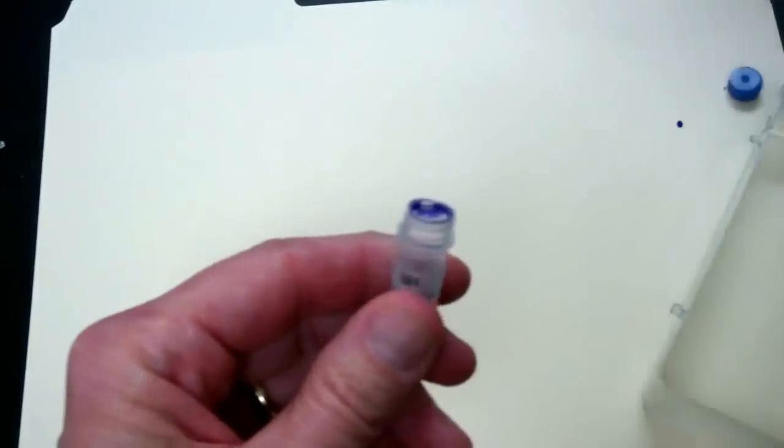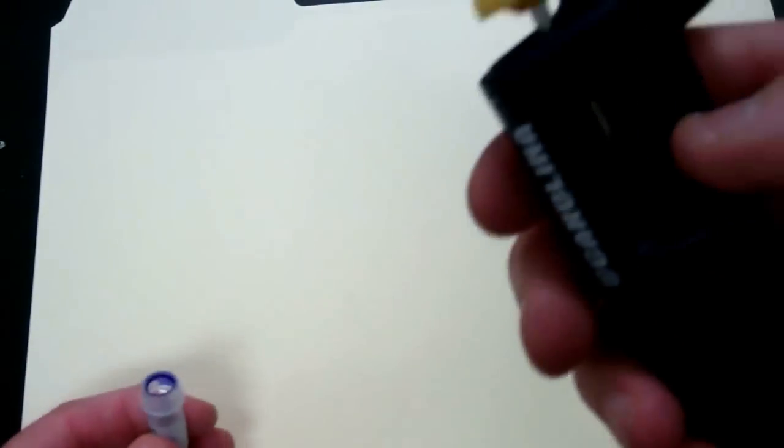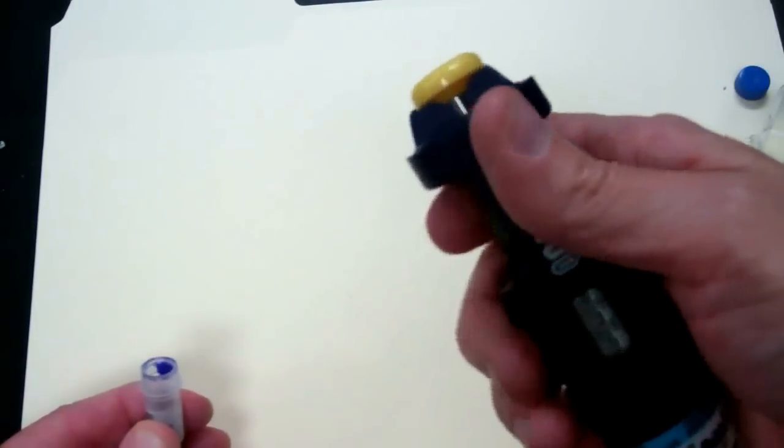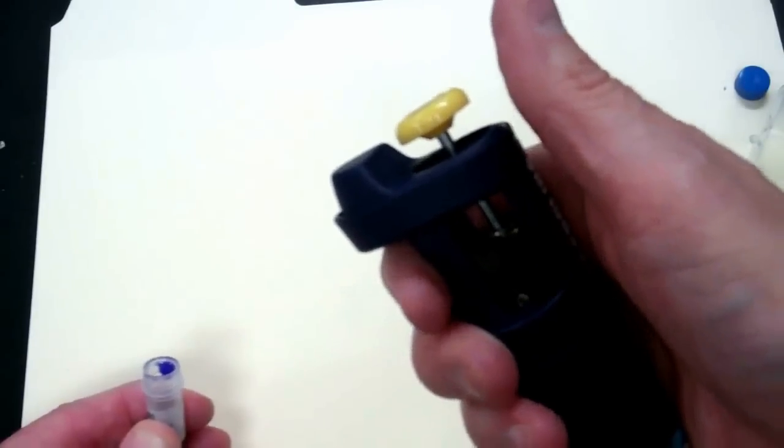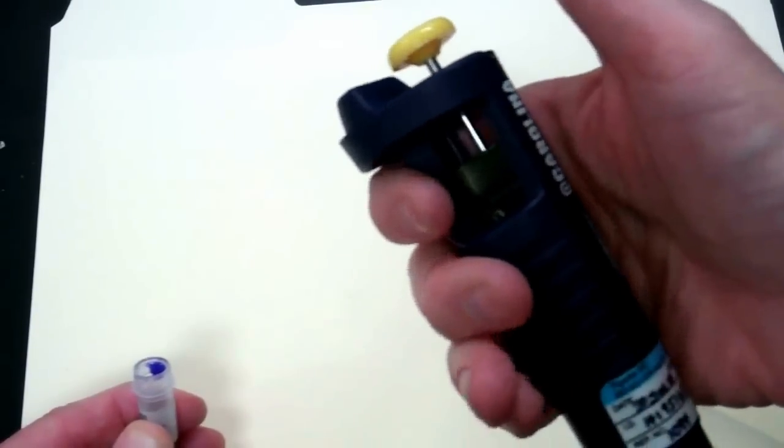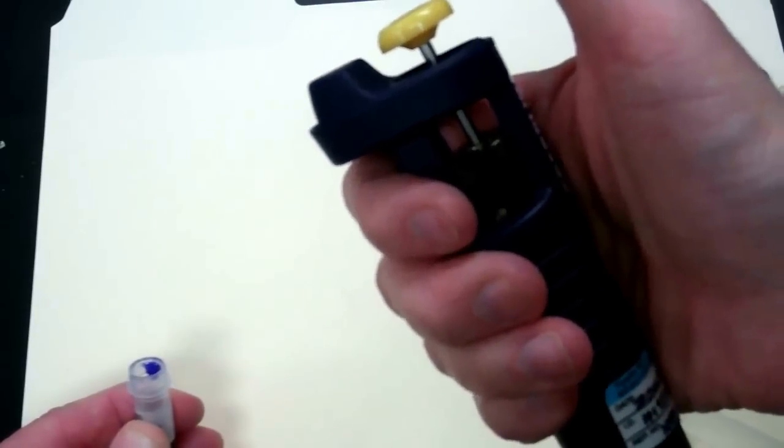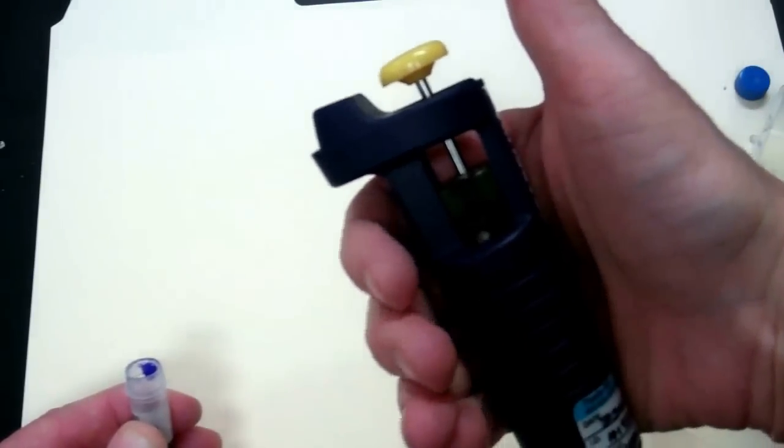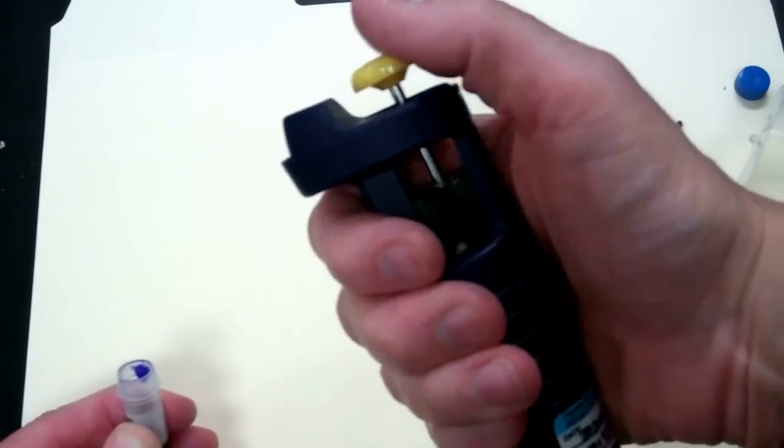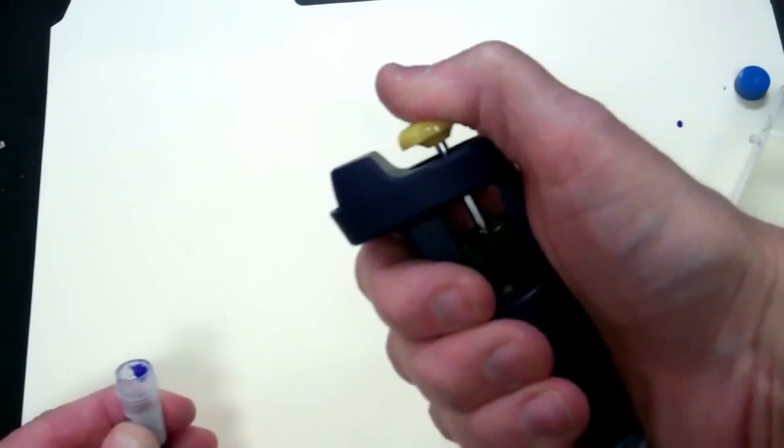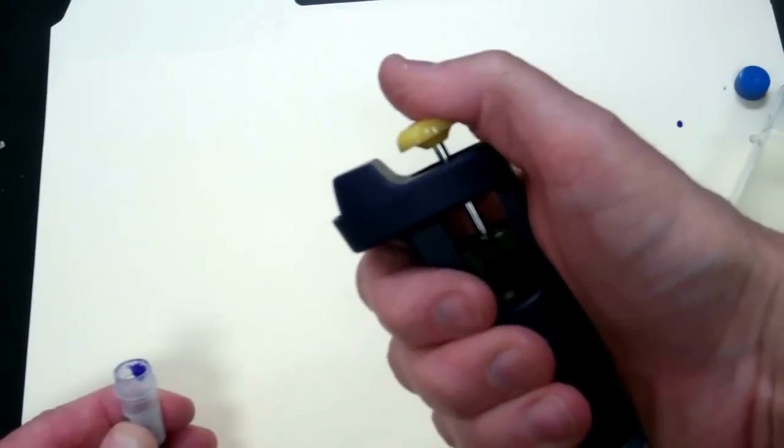So you have a little small micro test tube. Now the micropipette has what we call two stops. When you place your hand around the micropipette, you want to grab it so that you have your fingers gripped around the side and your thumb is on top. You have a lot more control with your thumb, so please use your thumb.